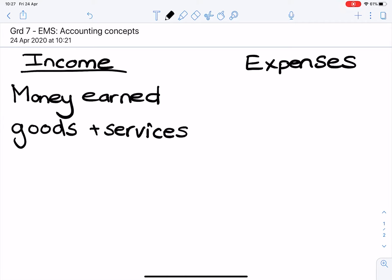Now, let's remind ourselves what goods and services are. Goods are products that a business sells and services are people's time that they are selling. For example, a doctor or a lawyer.